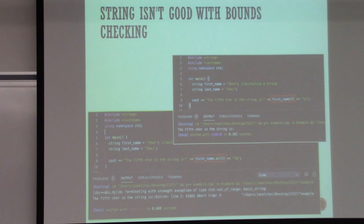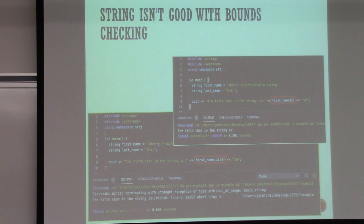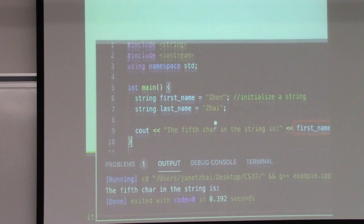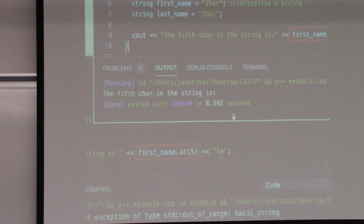One caveat for string: string is not good with bound checking. Remember with a char array you have a specific size like 'char[50]'. With string, you don't restrict how many letters you put in — it could be 4, 8, or 40 — meaning you really don't know the size just by looking at it. If someone tries to grab index 5 from a 4-letter string using square brackets, you'll just get empty output — no error — and the program continues.